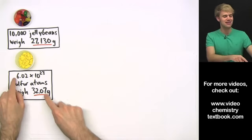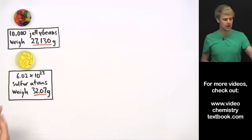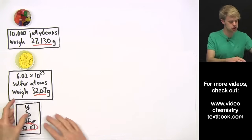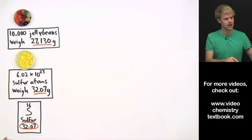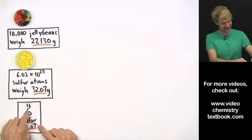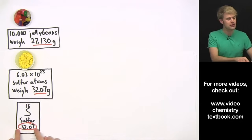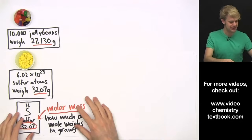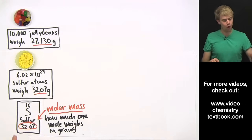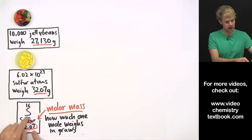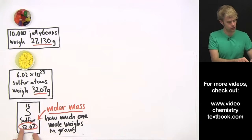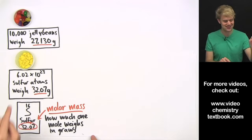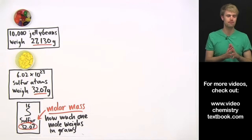So how did I know that a mole of sulfur atoms weighed 32.07 grams? Well, all you got to do is look at the periodic table. If I look sulfur up on the periodic table, I've got the element name and the abbreviation and stuff, and then I got this number down here. This is what we call the molar mass, and this number down here tells us how much one mole of this element weighs in grams. So 32.07 is how much one mole, 602 hexillion sulfur atoms, weighs.